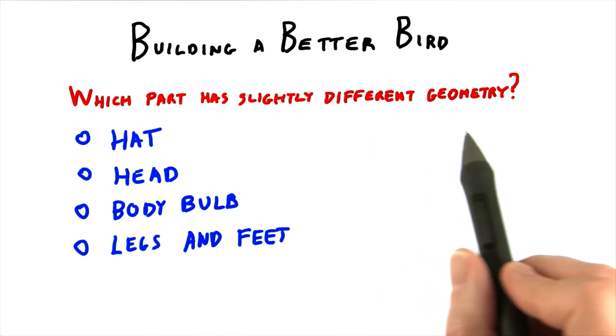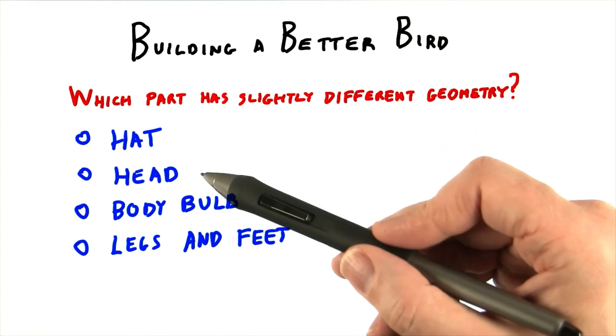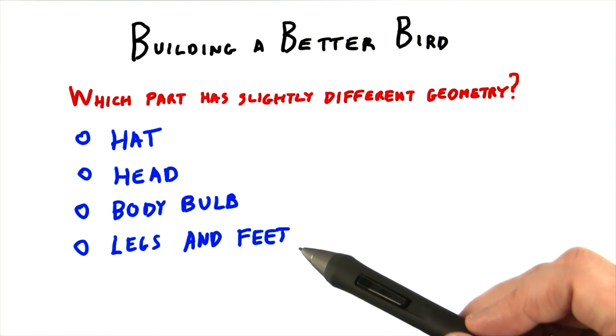Which part has slightly different geometry? The hat, head, the body bulb, or the legs and feet?